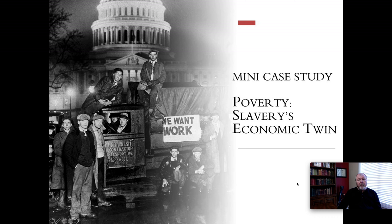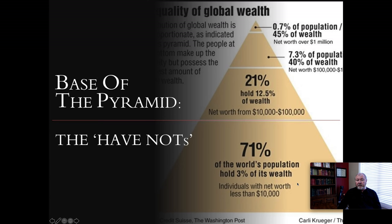As a mini case study, consider poverty, which I consider to be slavery's economic twin. The reason is that it's poverty that oftentimes forces people into slavery, or that motivates the taking of slaves. Look at the base of the pyramid — the base of the pyramid of the have-nots. That is the 71% of the world's population that holds only 3% of the world's wealth. The base of the pyramid is defined as those people living on under two United States dollars per day. The wealth of approximately 3.5 to 4 billion people in this world is matched by the wealth of the eight wealthiest people in the world.